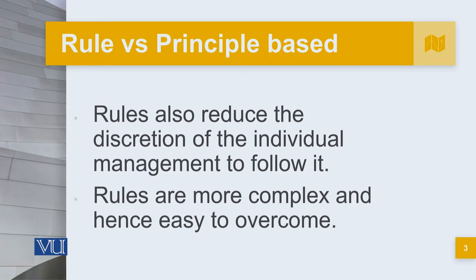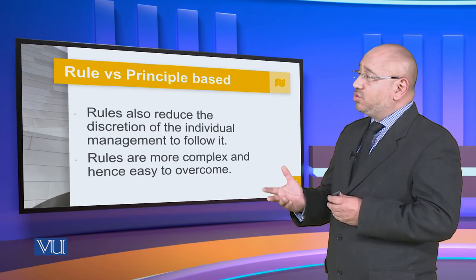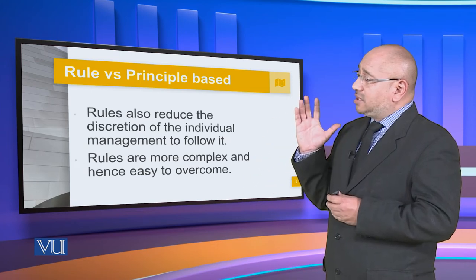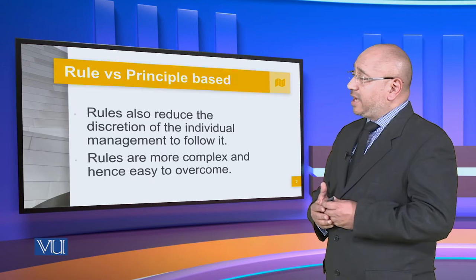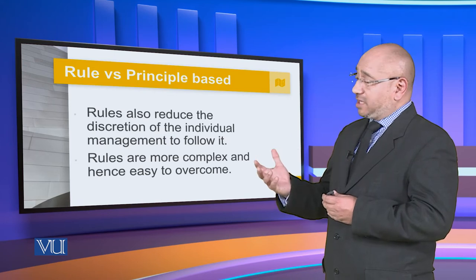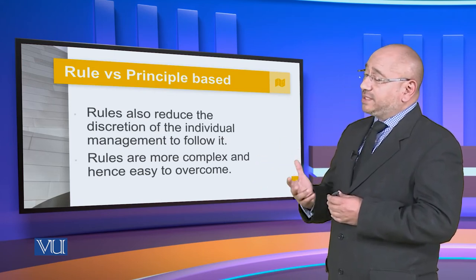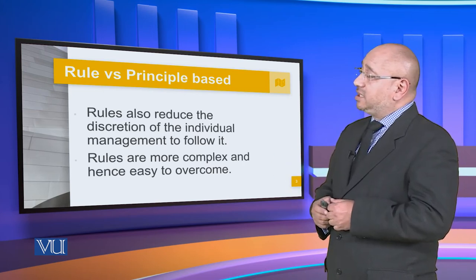Rules also reduce the discretion of individual management. When looking at rules, there is very less discretion compared to principle-based regulations. Rules are more complex and hence easier to overcome. These rules are very explicit, very controlled, and most importantly, followed exactly. For example, if there is a rule that offices will start at 8 AM, then offices will start at 8 AM. If there is a rule that everyone has to be dressed according to a particular format, then that is how it has to be done. There could be rules which are systemic, and rules which are process-oriented. Therefore, there is very little deviation between these different rules, which are mandatory as per government regulations.